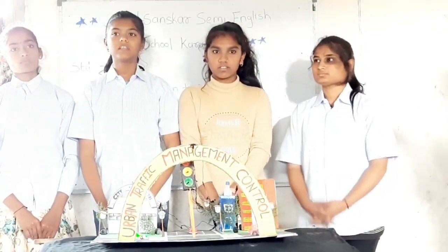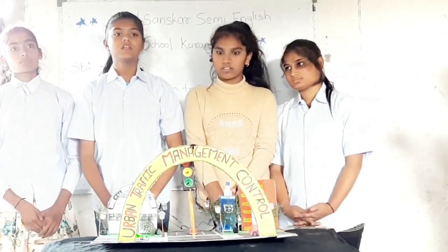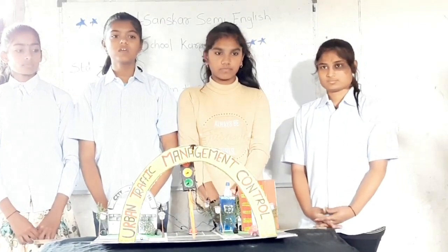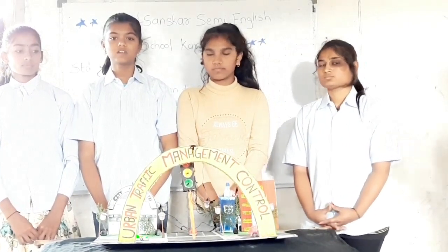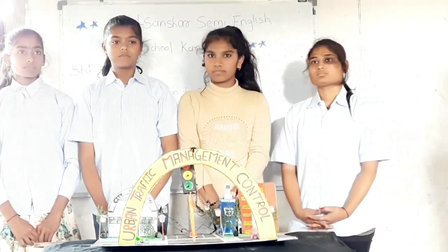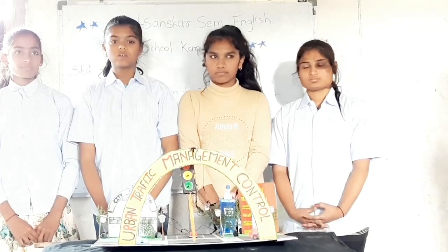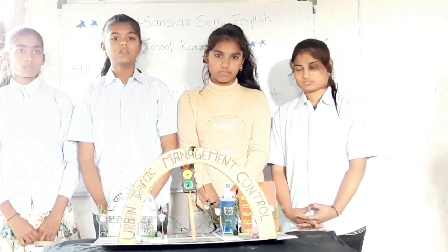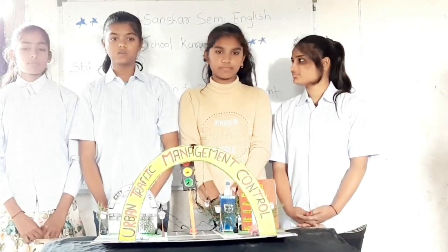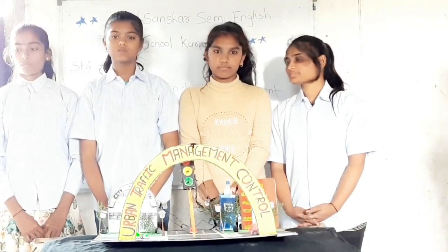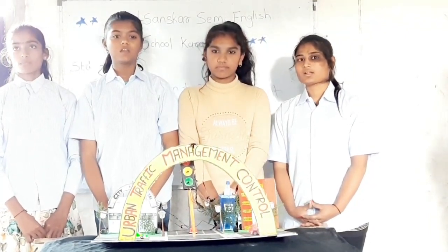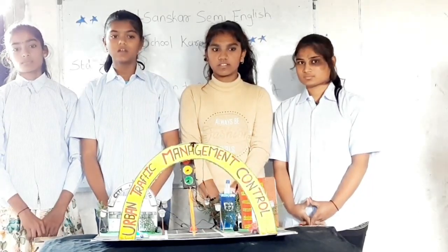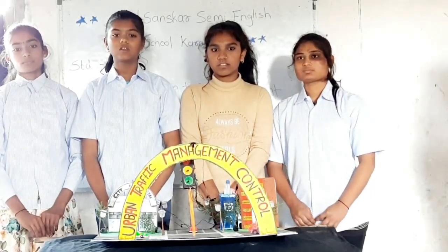I am telling about the uses of traffic signals. Traffic signals are used to control traffic on roads and at stair crossings. The first traffic signal was used in London. It has 3 universal colors which are red, yellow, and green.